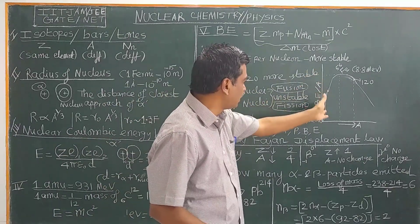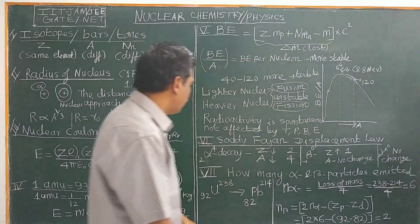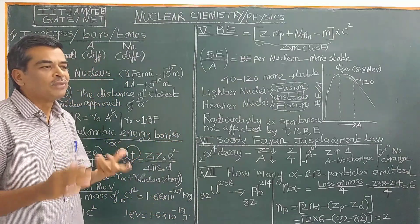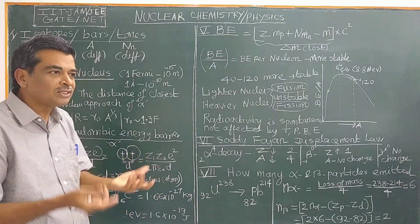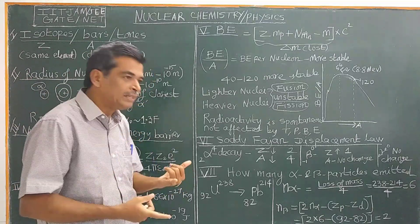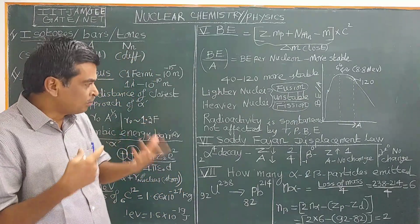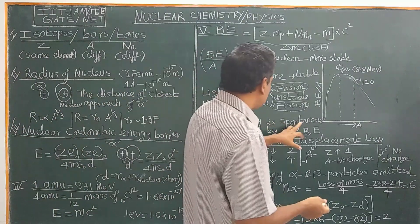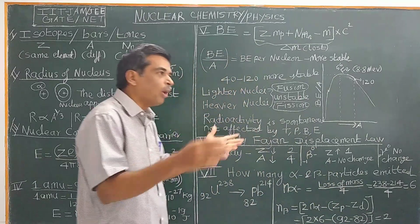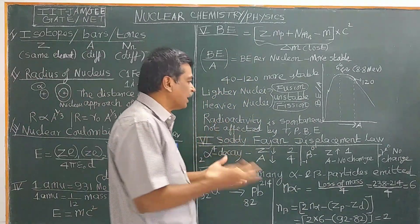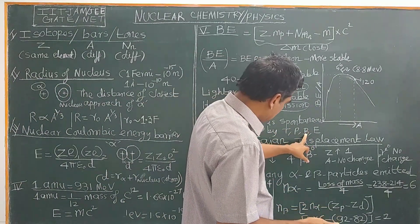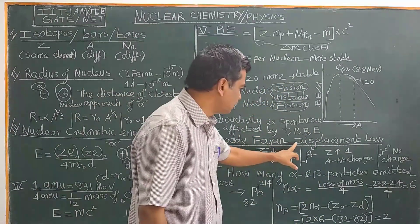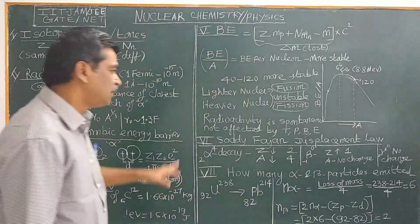Radioactivity is a spontaneous process — not affected by chemical reactions, light, temperature, pressure, magnetic field, or electric field. Nuclear reactions, especially radioactivity, are spontaneous and not affected by any external agents. Next, let us discuss Soddy-Fajans displacement law.